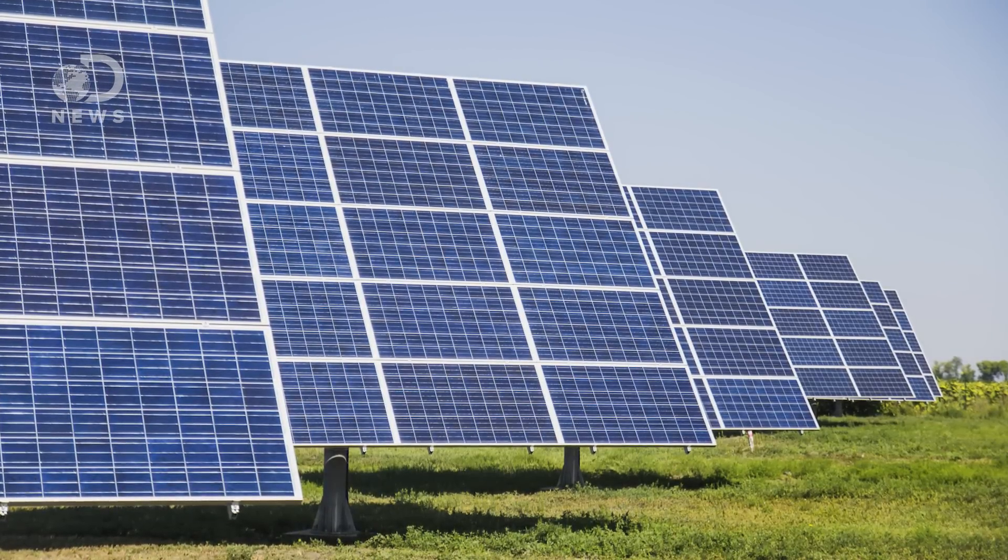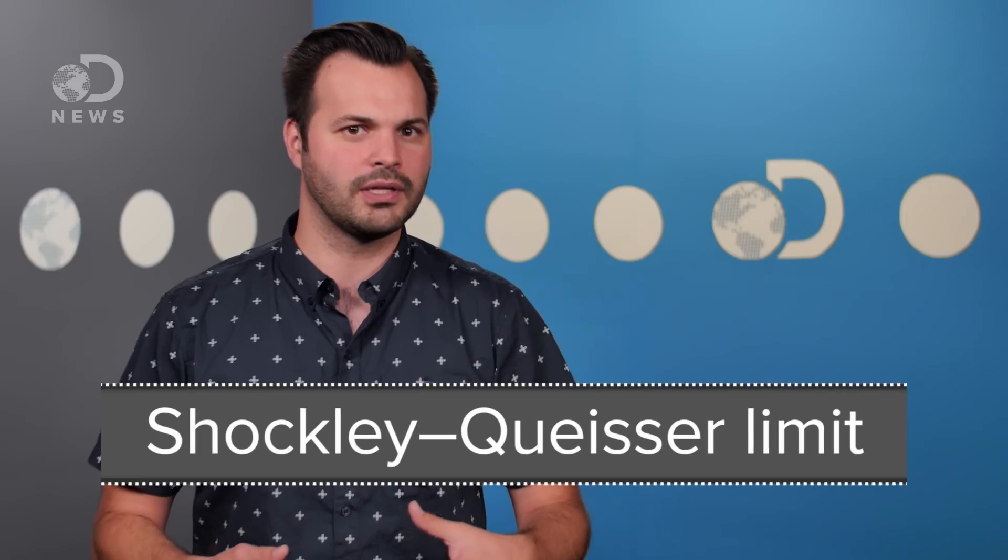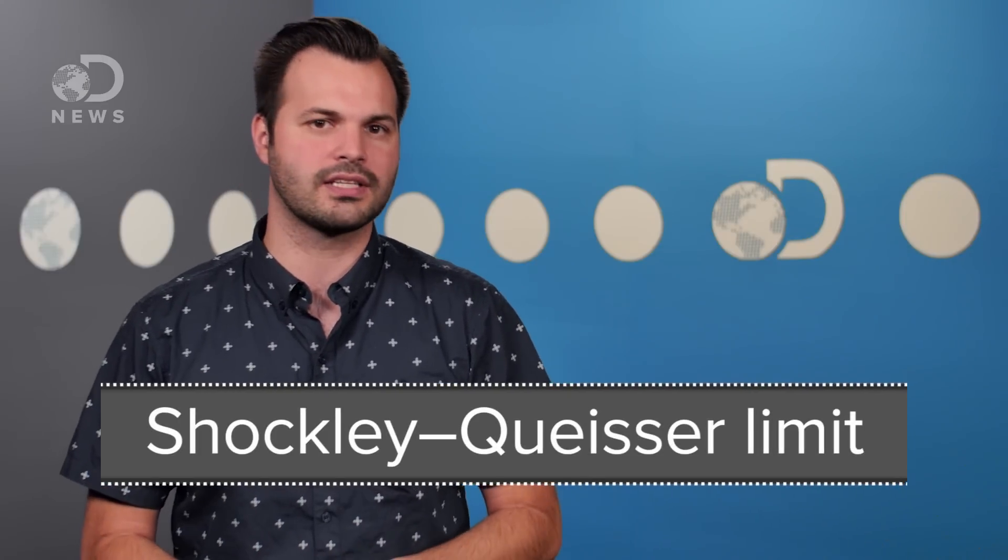Part of the reason is solar panels are just not efficient at sucking up sun droppings. According to the Shockley-Queiser limit, a single layer of solar cells in ideal conditions could theoretically be about 33.7 percent efficient.